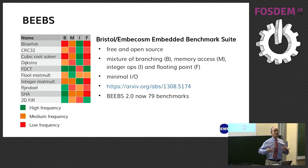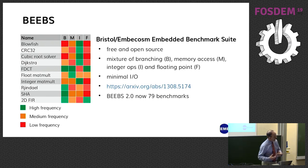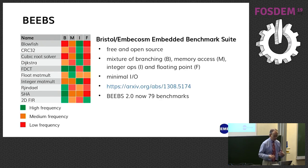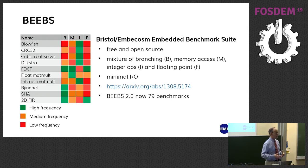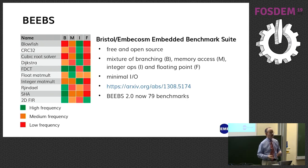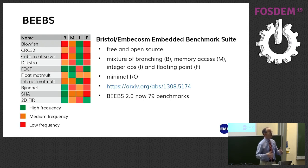It aims to have a mixture of types of programs: some that do a lot of branching, some that do a lot of memory access, some that do a lot of integer operations, and some that do a lot of floating point. Many benchmark suites assume they're going to print out the answers, which if you're deeply embedded is a real problem because you generally don't have printf. So we try to have minimal I/O here, and the results are captured without actually printing anything out. There's a paper on the research behind this on Archive — the link's on the screen.